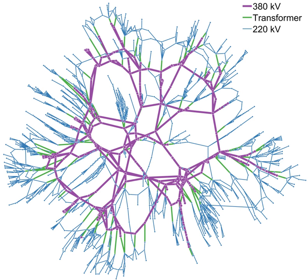37 states plus the District of Columbia took some action to modernize electric grids in the first quarter of 2017, according to the North Carolina Clean Energy Technology Center. The states did so to make electricity systems more resilient and interactive. The most common actions were advanced metering infrastructure deployment, carried out by nineteen states, smart grid deployment, and time-varying rates for residential customers. In the first quarter of the year, 82 relevant bills were introduced in different parts of the United States, though most remained pending at the close of the quarter.